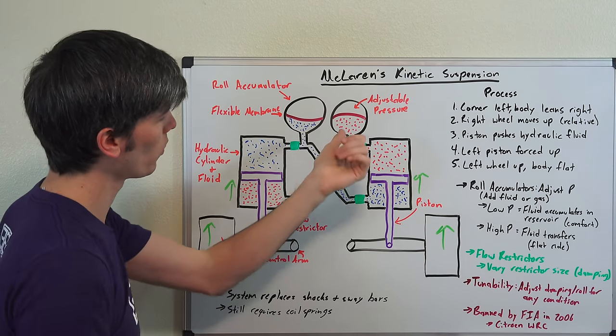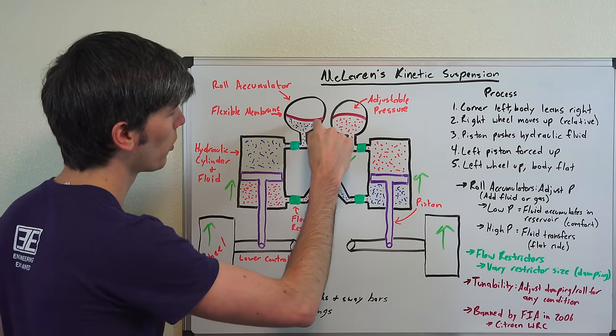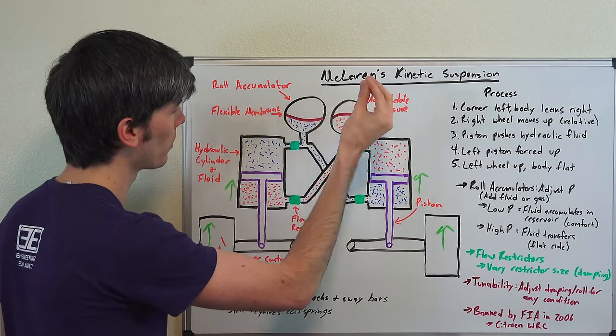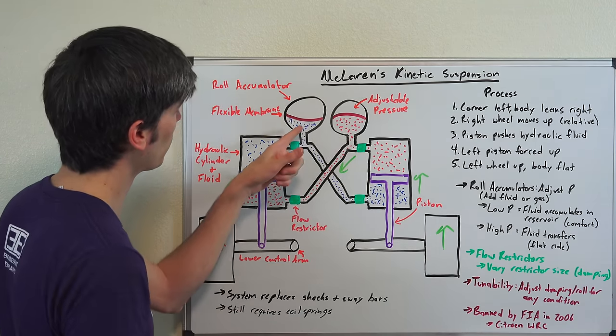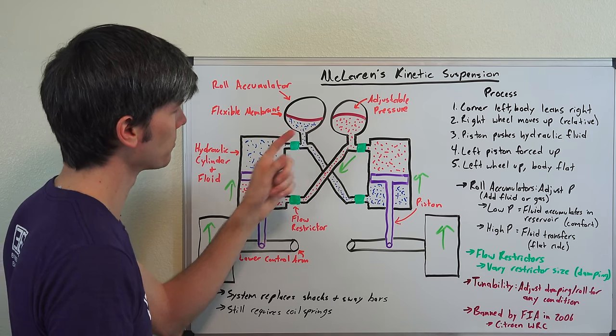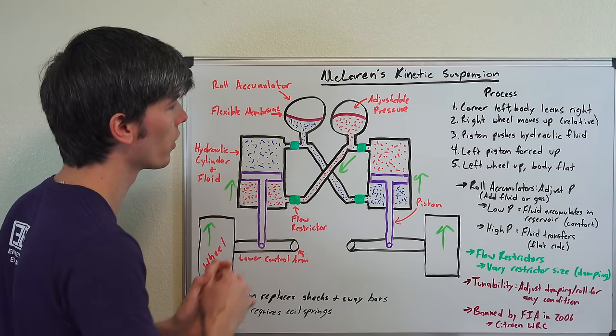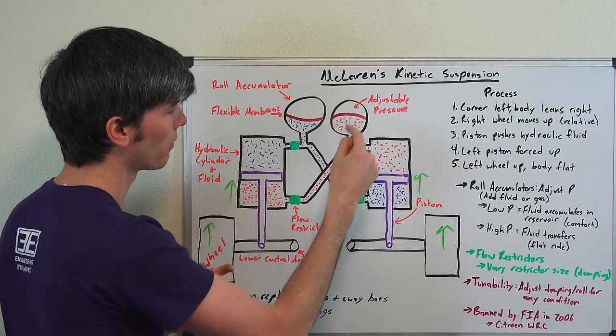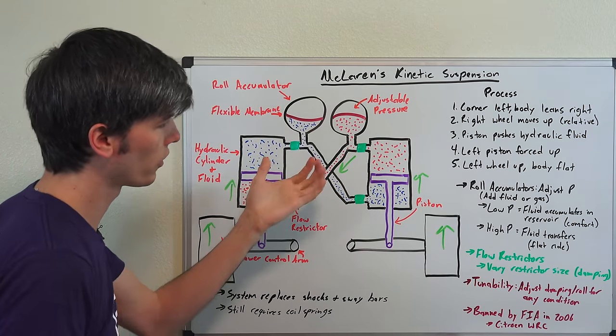We have these roll accumulators and so these have a flexible membrane. There's a gas above them, probably something like nitrogen, and then below you have that hydraulic fluid. And you can adjust the pressure in these roll accumulators. You can either add gas or you could add fluid to the system.